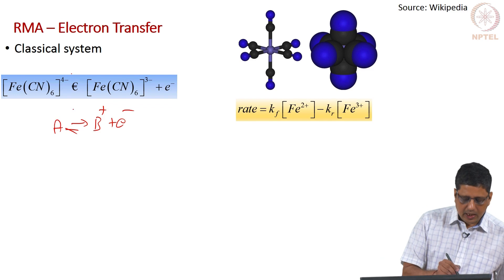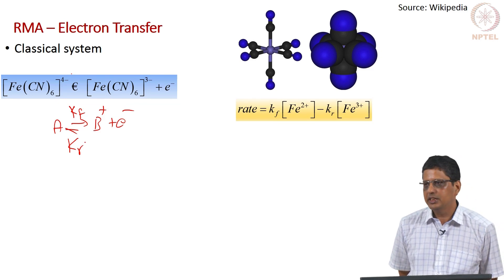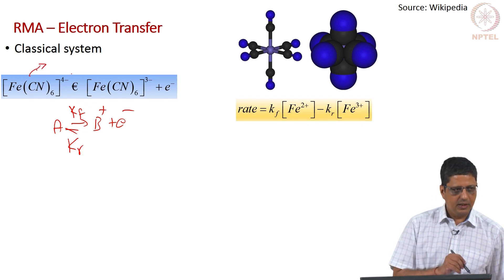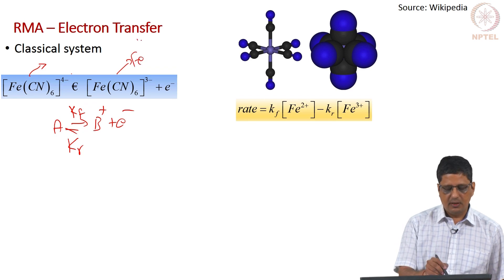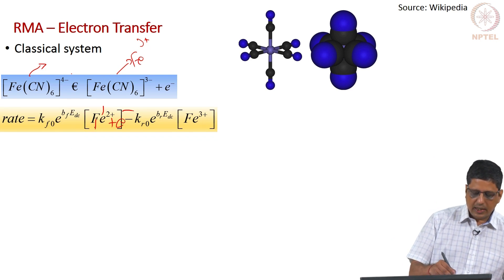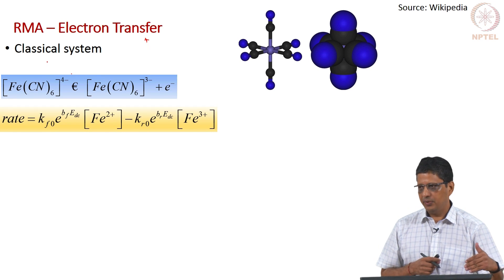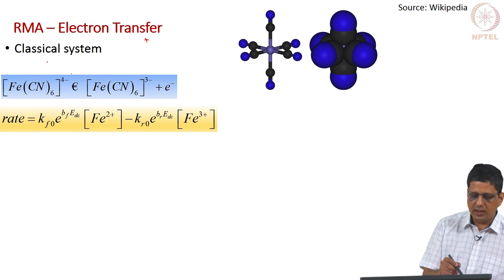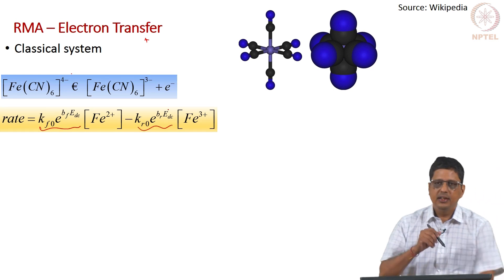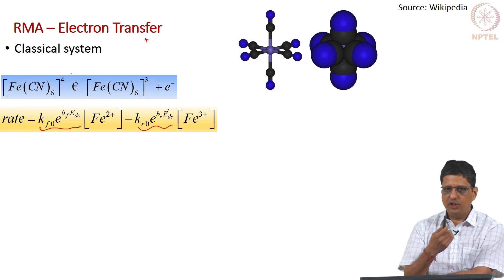Now the forward rate constant I will call as k_f, reverse I will call as k_r, and the square brackets indicate concentration — I should use activity but I will use concentration, saying activity coefficient is 1. So the net rate is forward rate k_f multiplied by [Fe²⁺] minus the reverse rate k_r multiplied by [Fe³⁺]. Now the rate constants, because they involve electron transfer — meaning the forward reaction gives an electron and the reverse reaction takes an electron — they will change with potential. So I am writing k_f as k_f0 times exponential of b_f times the DC potential. Now I am going to apply only DC potential; later I will show what happens when you apply AC potential.